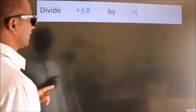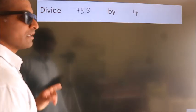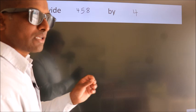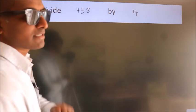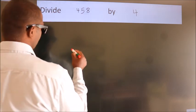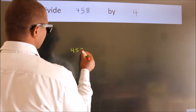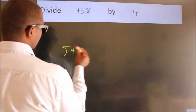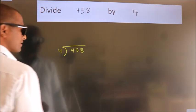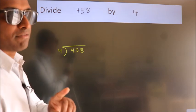Divide 458 by 4. To do this division, we should frame it in this way: 458 here, 4 here. This is step 1.